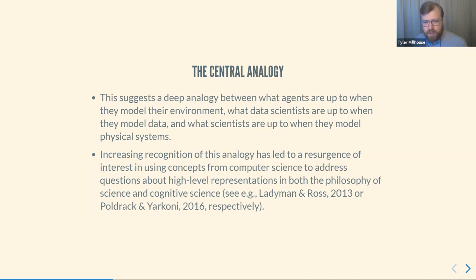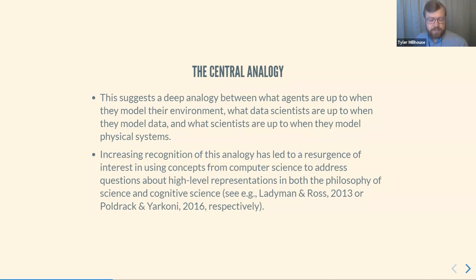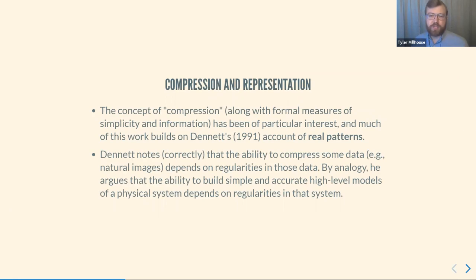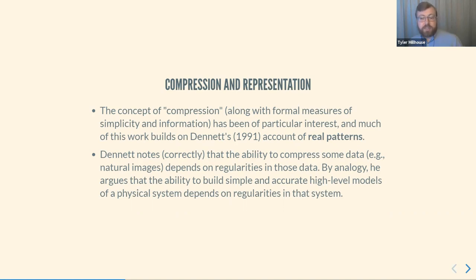One of the big analogies motivating my research is a deep analogy between what agents are doing when they model their environment, what data scientists are doing when they model data, and what scientists are doing when they model physical systems — especially with respect to finding good high-level representations. One concept of great interest is compression, along with formal measures of simplicity and information. A lot of this work is built on Dennett's 1991 paper 'Real Patterns.' Dennett notes that the ability to compress data — like natural images — depends on regularities in those data, and by analogy, the ability to build simple and accurate high-level models also depends on regularities in the target systems.